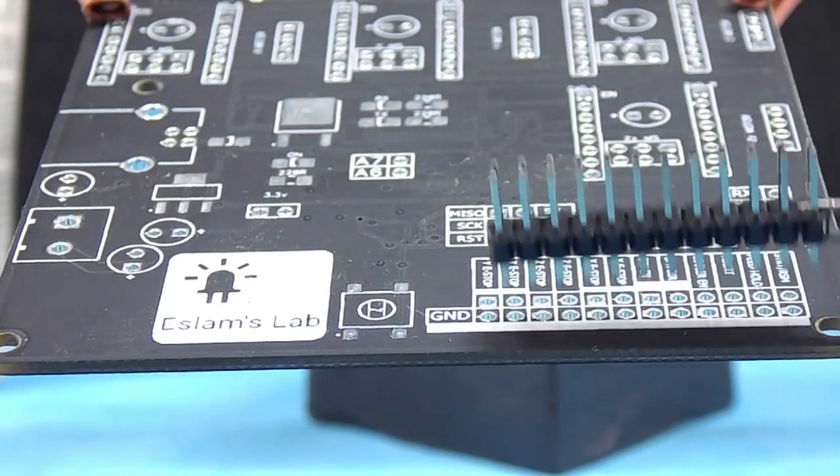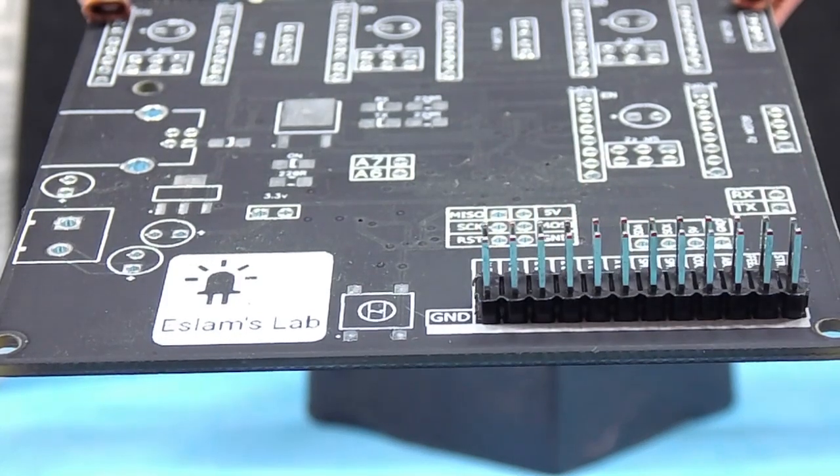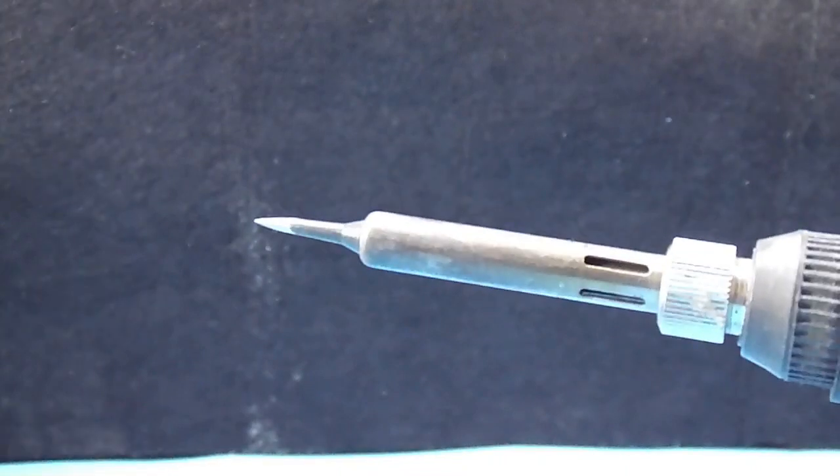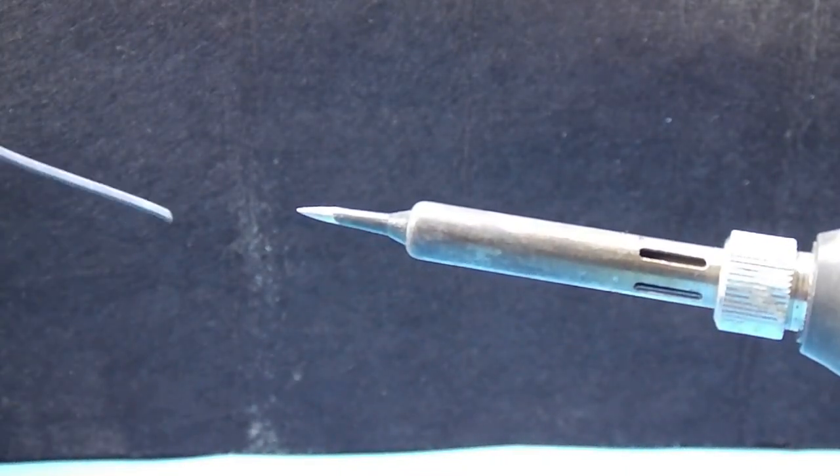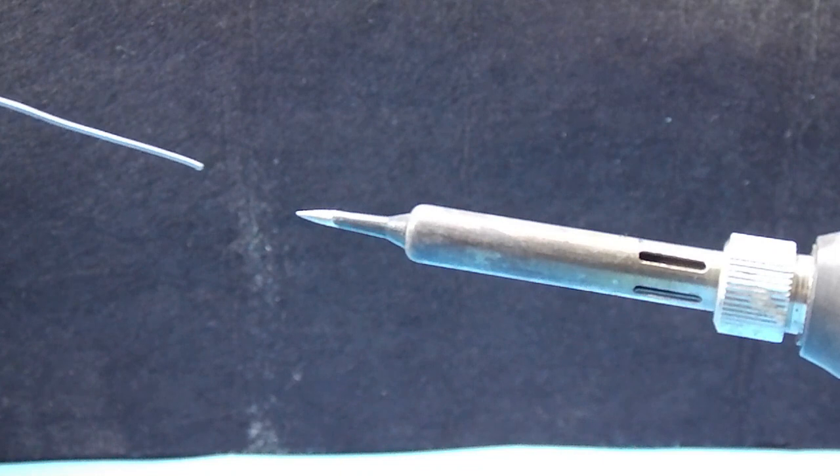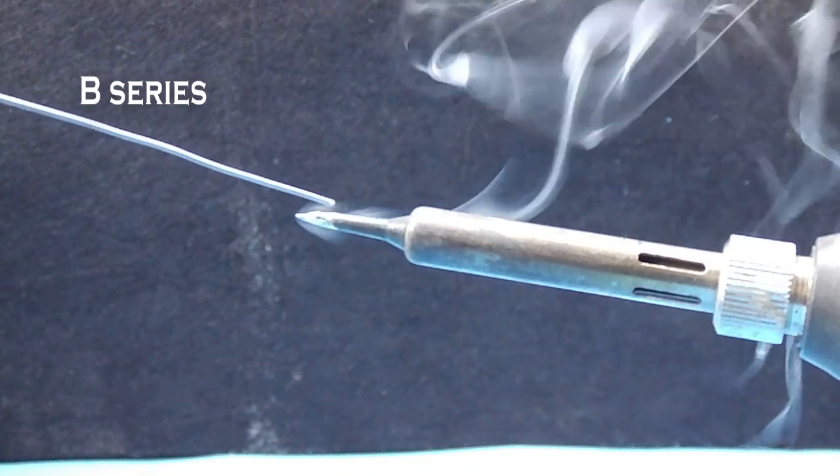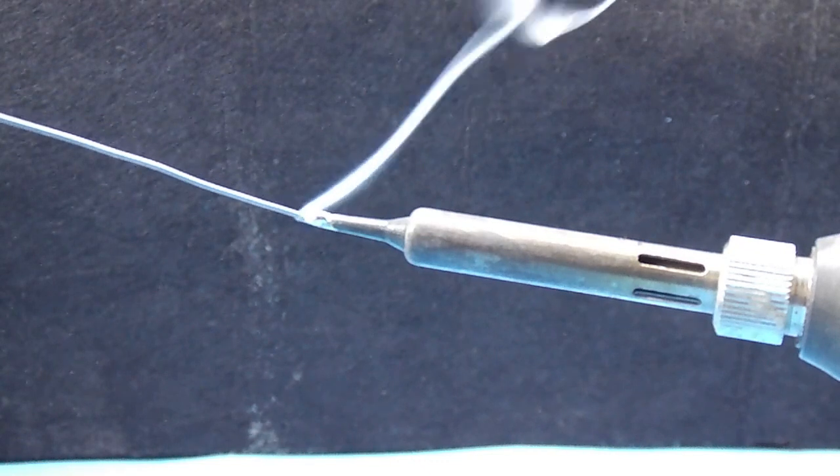Through hole components are much easier than SMD components. Let's solder the pin headers. For through hole components, I will use a tip from P-series. This kind of tips can work from any angle.